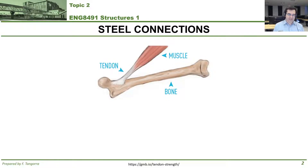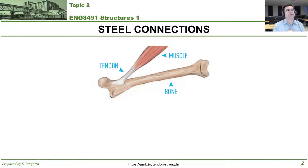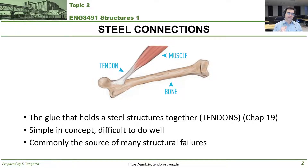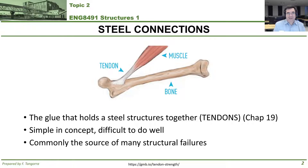What we're chatting about today is steel connections. If you remember from the analogy we had previously, the structure in a building is basically the muscle, the bones, and the tendons of that building. Connections refer to the tendons — they connect and glue together the structural elements to ensure they work together. You can find more about this in chapter 19 of our textbook. Connections are simple in concept — they just attach two structural steel elements — but they're difficult to properly design and execute, which is why many structural failures occur at the location of connections.